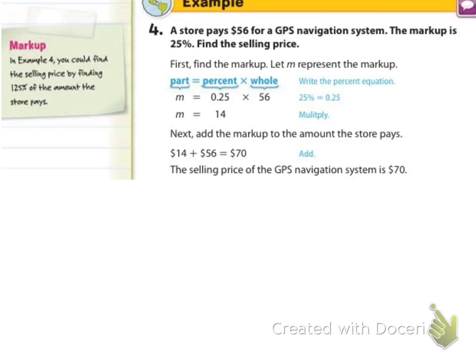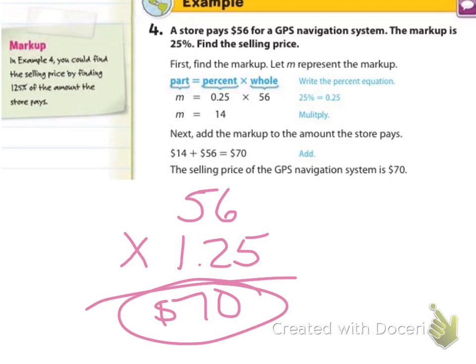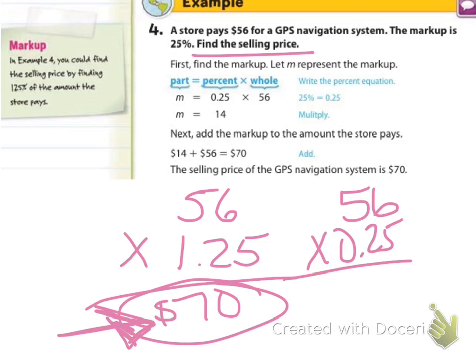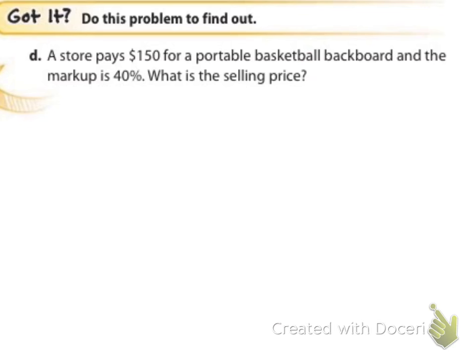Alright, so now here's an example with markup, and it says in example 4 you could find the selling price by finding 125% of the amount the store pays. So it says a store pays $56 for a GPS navigation system. The markup is 25%. Find the selling price. So we're going to take that 56 and we're going to multiply it times, and this again has the two methods that you could use, but I'm going to use the full price plus 25 extra percent. And when you multiply 56 times 1.25 to account for the 100% plus 25% markup, that's going to be a new price of $70. Now if it wanted to find out how much just the markup was, then I would do the 56 times 0.25 to find out how much just the markup is. But in this case it's asking you for the selling price, and that's what we're looking at right here. It's the price that they paid for it plus 25% more.